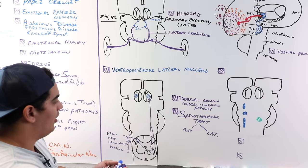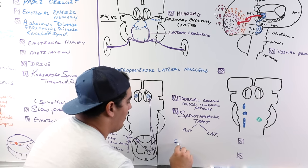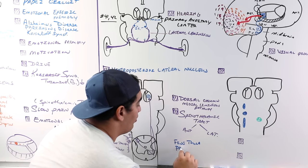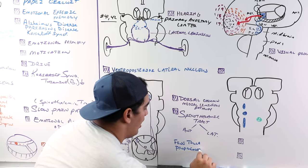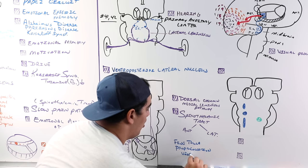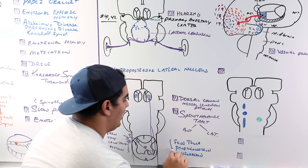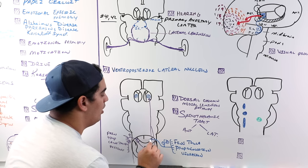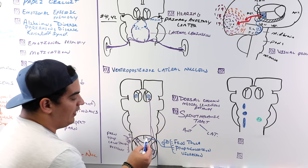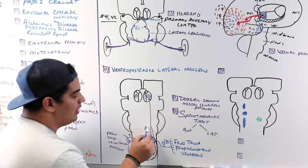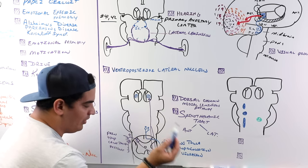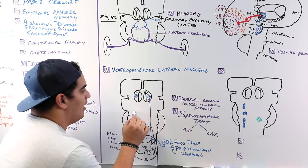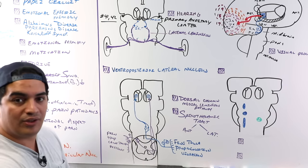The dorsal column-medial lemniscus pathway carries fine touch, discriminative touch, proprioception, and vibration sense. It enters the posterior gray horn, ascends in the dorsal white column, and synapses on nucleus gracilis and nucleus cuneatus in the medulla. Those fibers cross and ascend upward, terminating on the ventral posterior lateral nucleus, which sends that information to the primary somatosensory cortex.